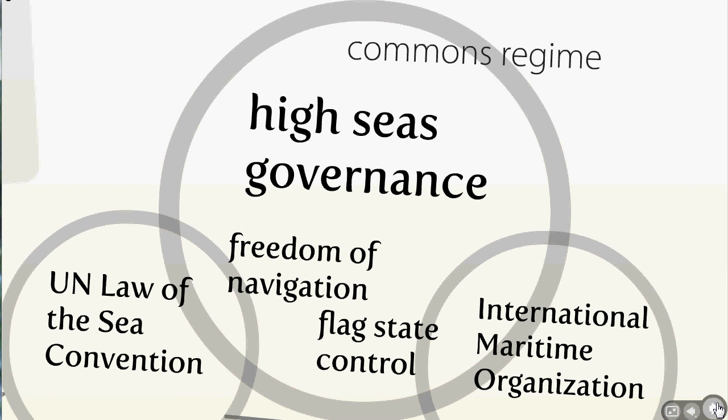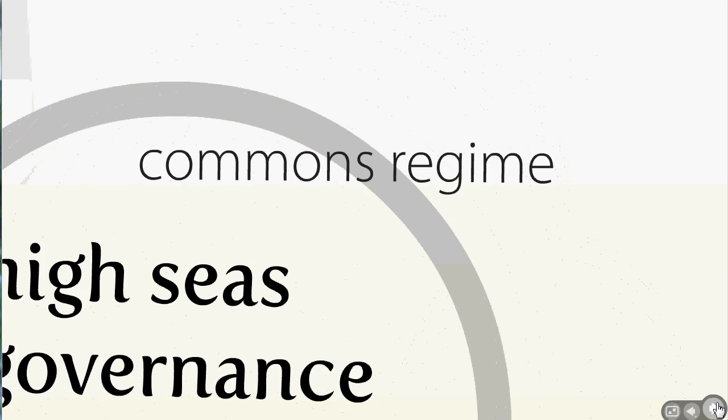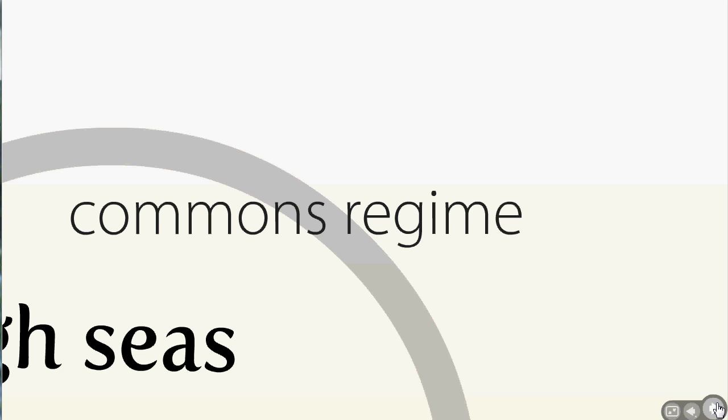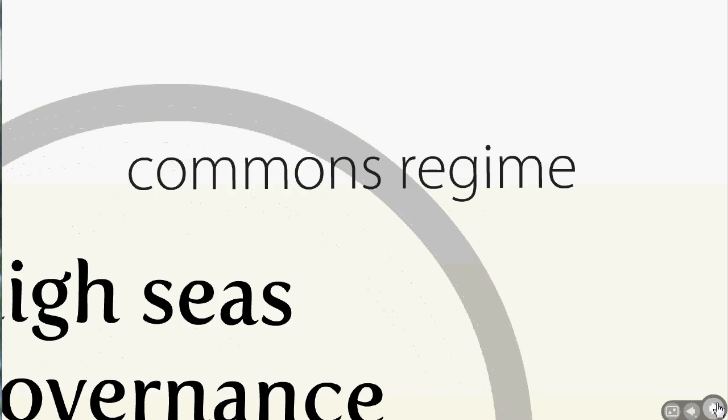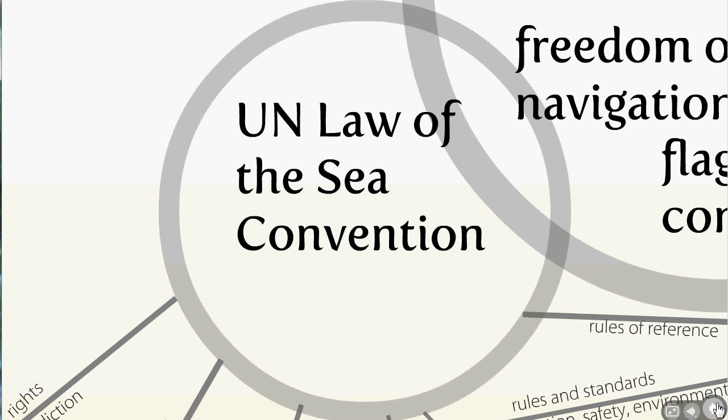At the other end of the diagram, we have a set of community interests. The high seas regime is built around freedom of navigation, so all states have equal access to the oceans, and flag state control. Law on the high seas follows the flag — that is, vessels are subject to the law of the flag they fly. So you're relying on flag states to maintain order in this commons regime. But it's not totally unregulated; the high seas is an area bound by law.